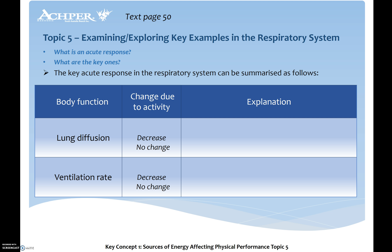Lung diffusion and ventilation capacity won't change acutely — those sorts of changes would occur with a chronic response. But immediately, your lung diffusion capabilities are not going to change; you will be able to diffuse as much oxygen as you can at that point.